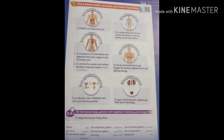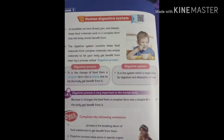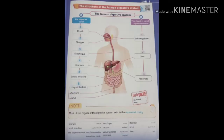Now we will start the digestive system. The digestive system is the system responsible for digesting and absorbing food. It helps us digest and absorb food through the digestion process. The digestion process is the changing of food from a complex form into a simple substance to let the body get benefited.